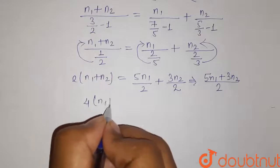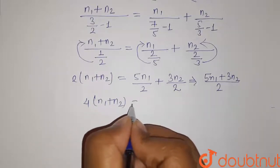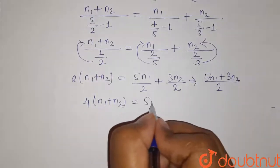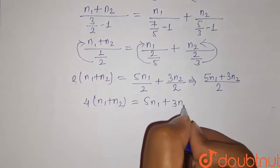Now cross multiply this. So it will be 4N1 plus 4N2 equals 5N1 plus 3N2.